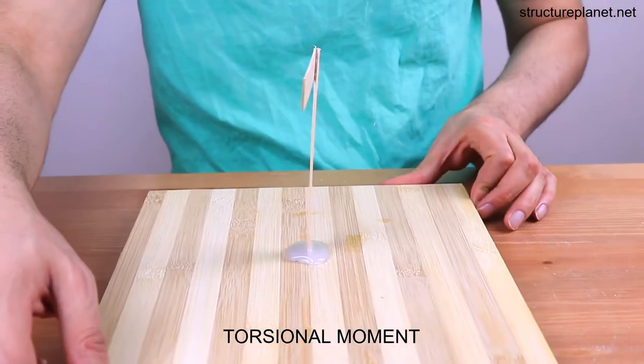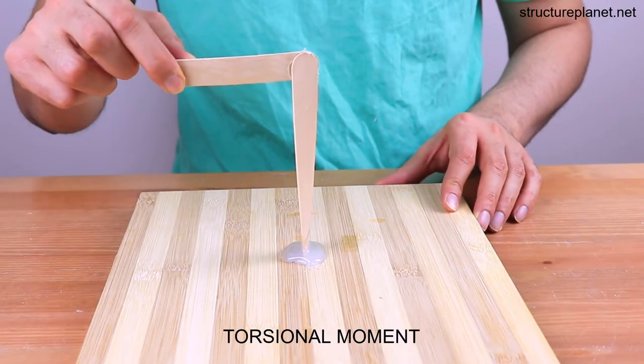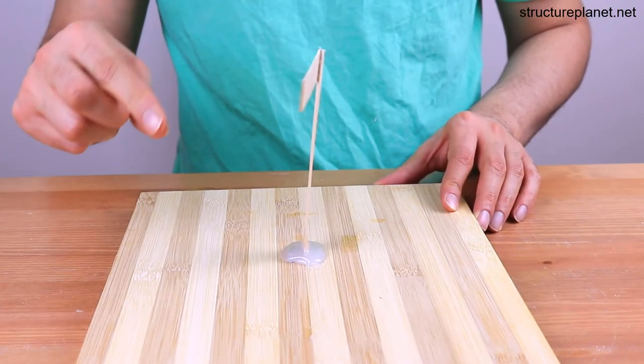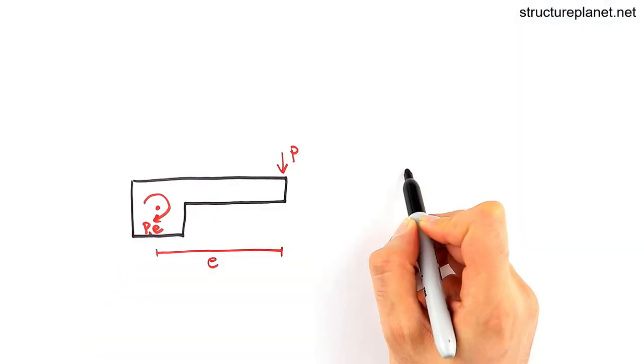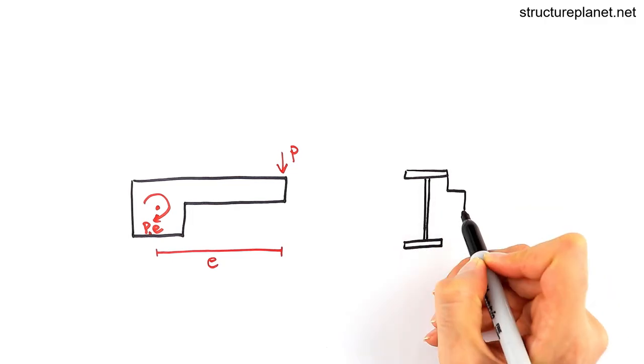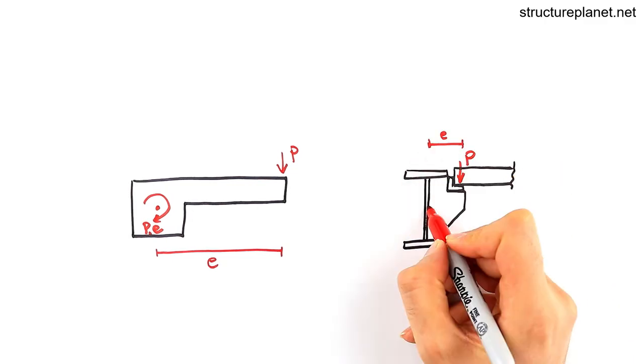Torsional moment happens when an object is twisted by twisting force. A structural member can be in torsion if an eccentric load is applied in a way that causes the member's cross section to rotate.